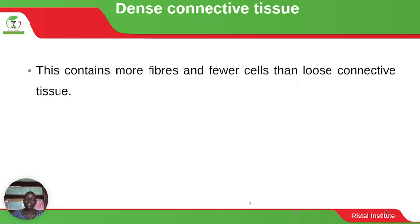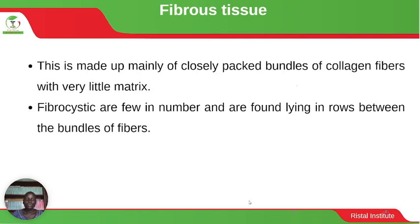Dense connective tissue contains more fibers and fewer cells than loose connective tissue. Fibrous tissue is made up mainly of closely packed bundles of collagen fibers with very little matrix. Fibrocytes are few in number and are found lying in rows between the bundles of fibers.